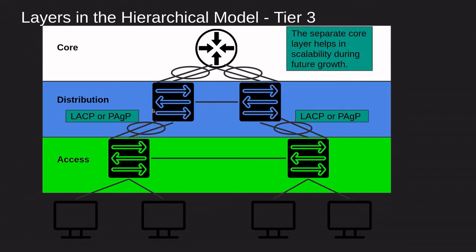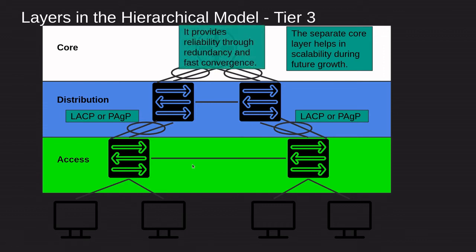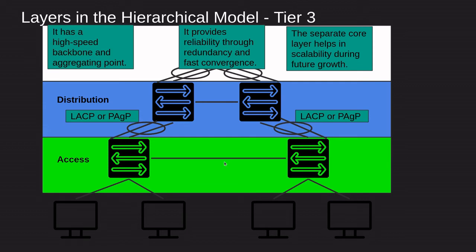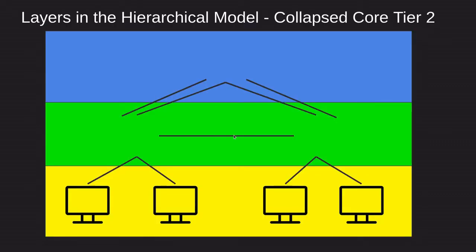The core layer helps with scalability during future growth, so if you keep adding more devices it is going to be scalable. It also provides reliability through redundancy and fast convergence. The core is either going to be a router, a layer three switch — and you want to have one active and one on standby, so if the active one goes down the standby can bring up connectivity very fast. It provides a high-speed backbone and aggregation point, so you need high-end devices there because it takes care of the entire network.